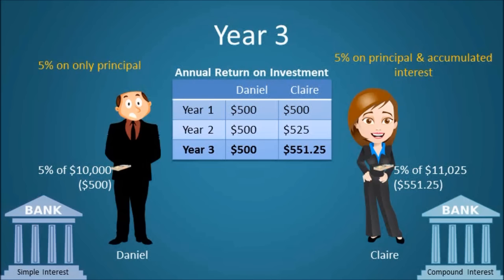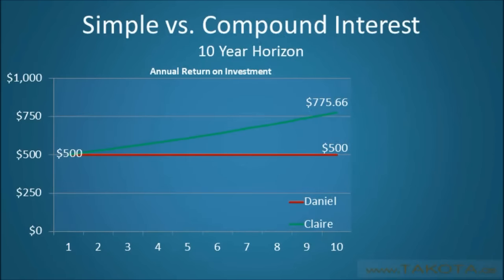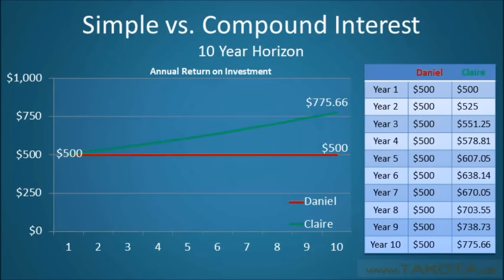While this may seem like an inconsequential amount of money, it is important to remember that the effects of compound interest increase over time. As we can see from this example, Claire's annual return on investment increased by $26.25, from $525 to $551.25, just from year two to year three. The effects of compound interest are even more profound when we compare Daniel and Claire's return on investment over a ten-year horizon, with Claire's annual return climbing from $500 all the way to approximately $775.